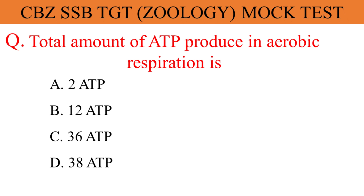Total amount of ATP produced in aerobic respiration is: The given options are A. 2 ATP, B. 12 ATP, C. 36 ATP, D. 38 ATP. And the correct answer is option D. 38 ATP.